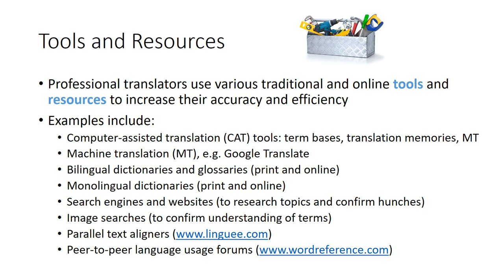Machine translation — la traducción automática, like Google Translate — is relied on quite a bit by professional translators. Bilingual dictionaries and glossaries help find the equivalent term in the other language, whether in a broad dictionary or a specialized medical, business, or tech glossary. Monolingual dictionaries are used to find out what a term means in the source language before translating it. Translators also use search engines and websites extensively to research topics covered in source texts.